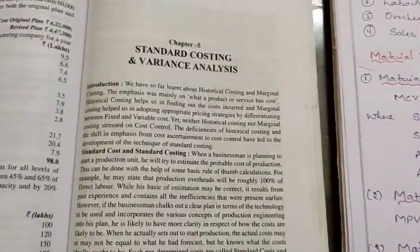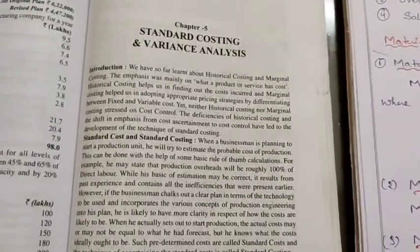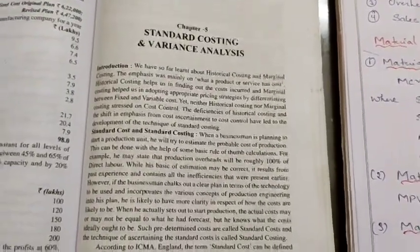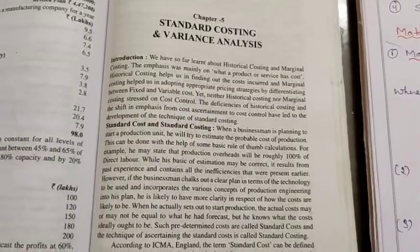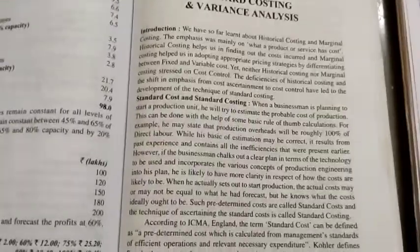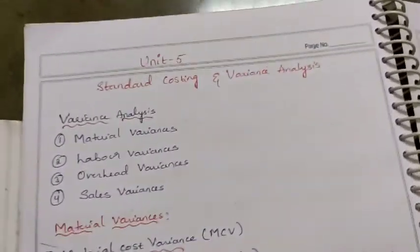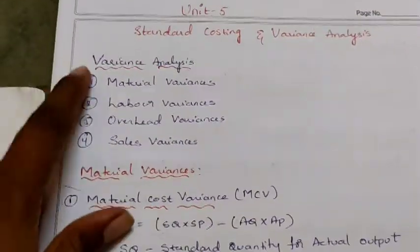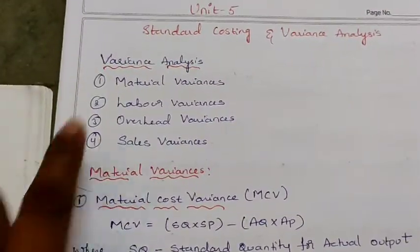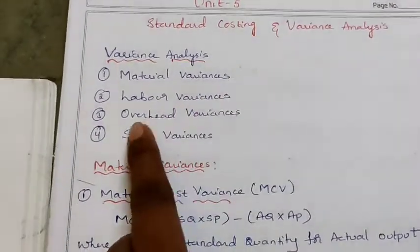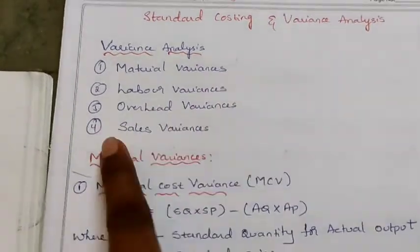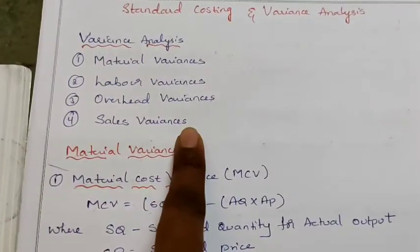Presently, I am going with the problematic part, that is variance analysis. In case of variance analysis, we have four variances: material variances, labour variances, overhead variances, and sales variances.